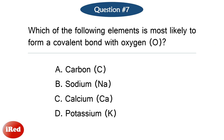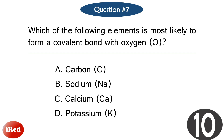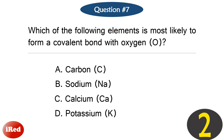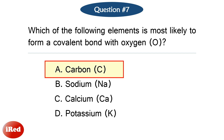Question number 7. Which of the following elements is most likely to form a covalent bond with oxygen? The correct answer is letter A, carbon.